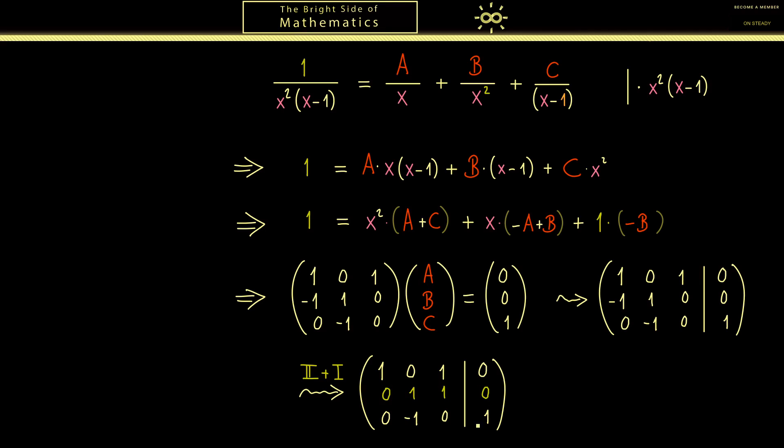So and then in the next step we want to generate a 0 here. Therefore we take the third row and add the new second row. Hence what we get is 0, 0, 1, 1.